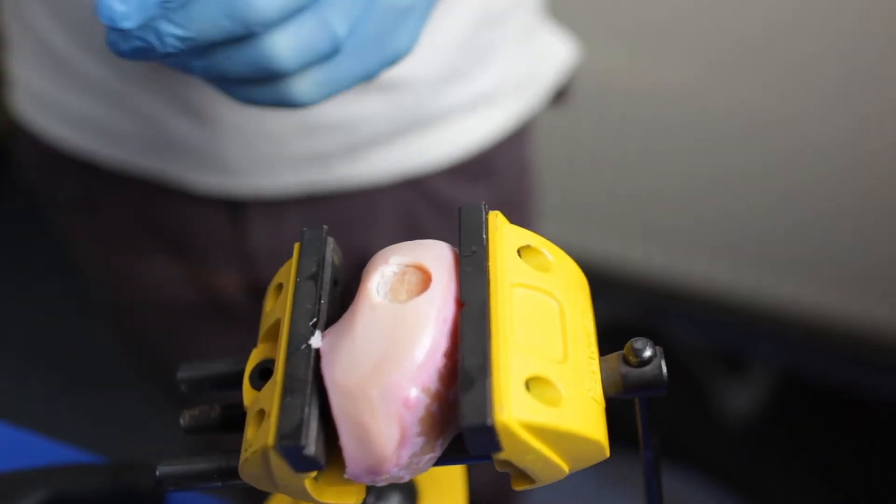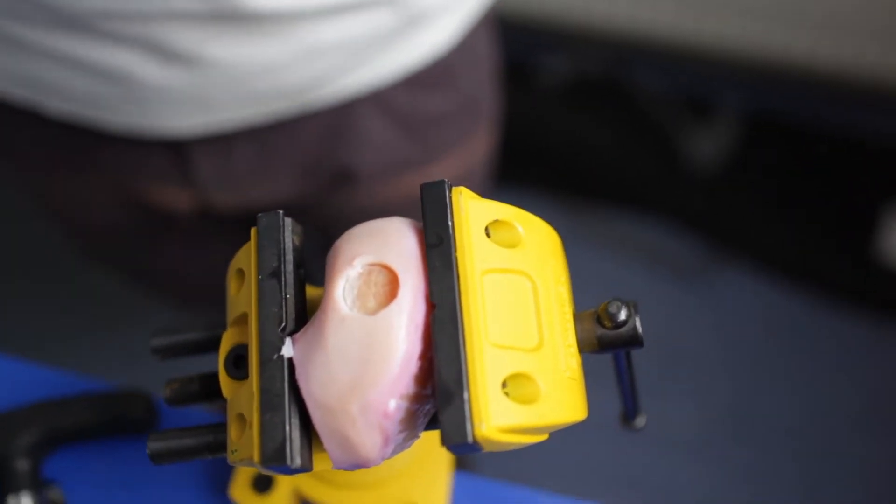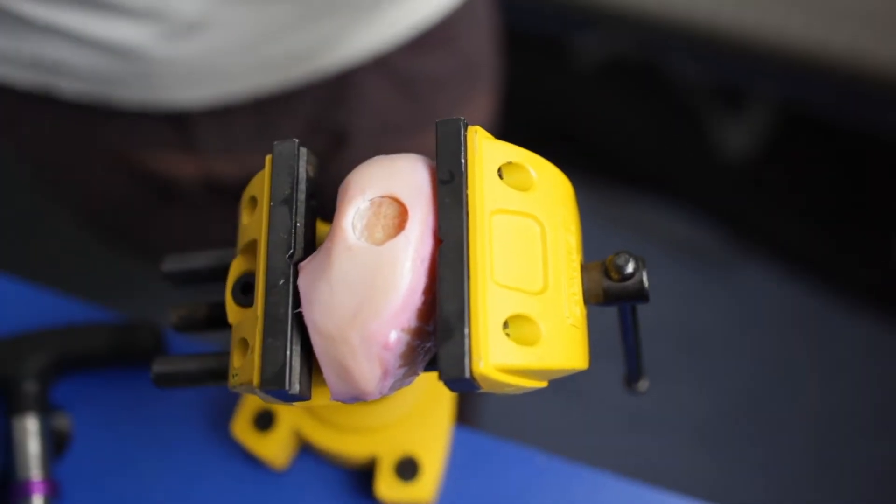This leaves you with a perfect disc cut. You can debride that further if you wish, if there's a sliver of cartilage left.